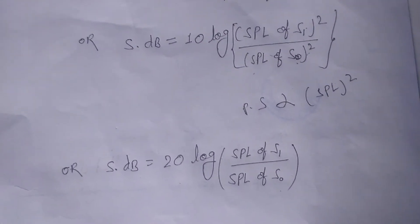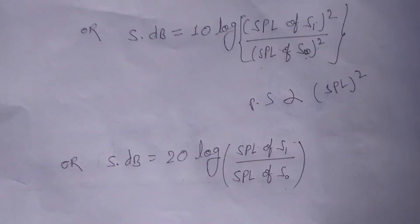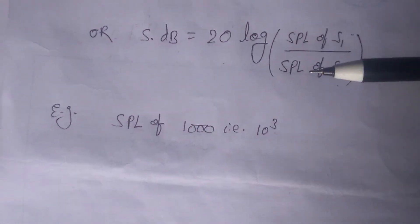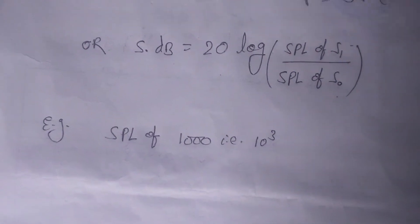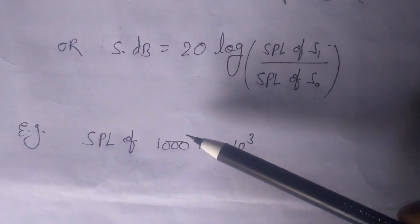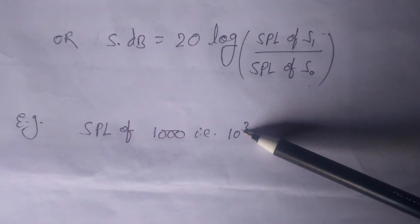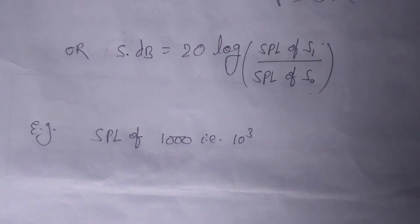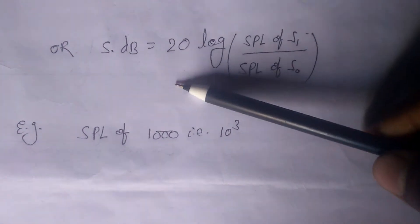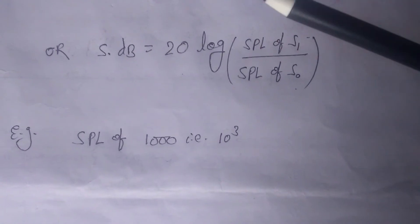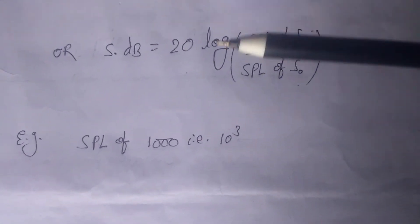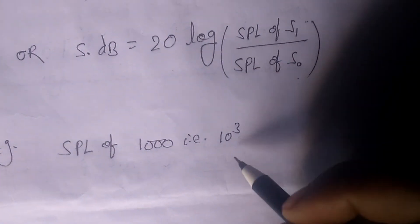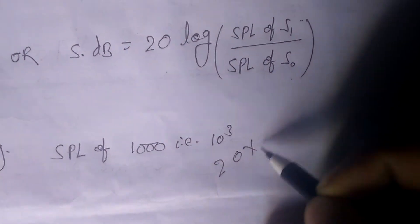Friends, let's put in an example for easier understanding. If a sound has an SPL of 1000 — that is 10 to the power 3 — times the reference sound, then it is expressed as 20 multiplied by 3, which equals 60 decibel.